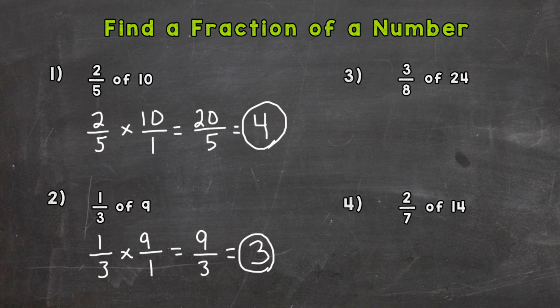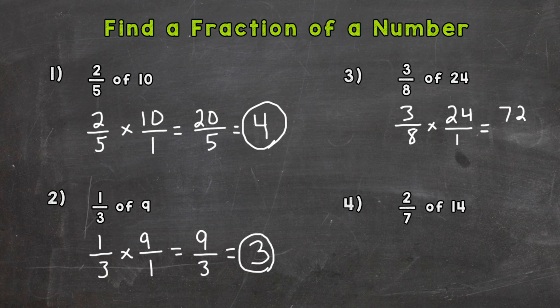For number 3 we have 3 eighths of 24. I'll show you a different way alongside the multiplication method. First, the multiplication way: 3 eighths times 24 over 1. 3 times 24 is 72, and 8 times 1 is 8, giving us 72 over 8. That's an improper fraction, so we do 72 divided by 8 — how many whole 8s fit in 72? Nine, with nothing left over. So 3 eighths of 24 is 9.